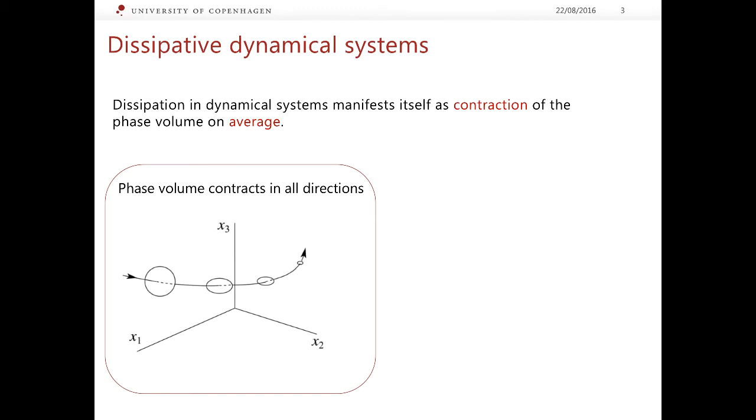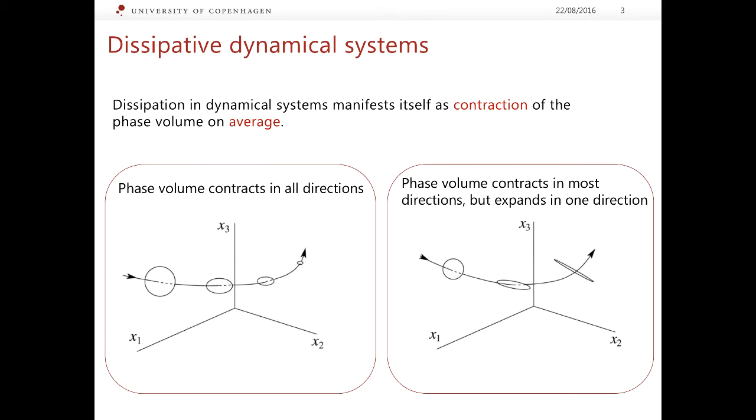However, this is not the only possibility because sometimes in some systems it is not impossible for the phase volume to shrink in all directions except one. So the volume will shrink but the size of the cloud does not necessarily shrink in all directions. And it can be possible that while technically getting smaller the phase volume gets smaller and eventually goes to zero but the size of our cloud of points becomes very large. And incidentally this scenario is occurring in very special dynamical systems which are capable of chaotic behavior.